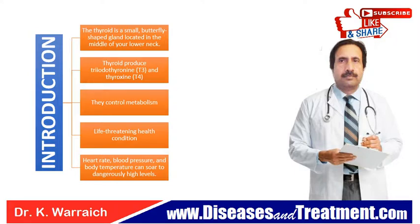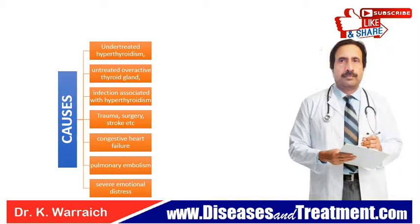What are the causes of thyroid storm? Thyroid storm is rare. It develops in people who have hyperthyroidism but are not receiving appropriate treatment. This condition is marked by extreme overproduction of T3 and T4 by the thyroid gland. Not everyone with hyperthyroidism will suffer a thyroid storm. Causes may include severe untreated or under-treated hyperthyroidism, or an overactive thyroid gland.